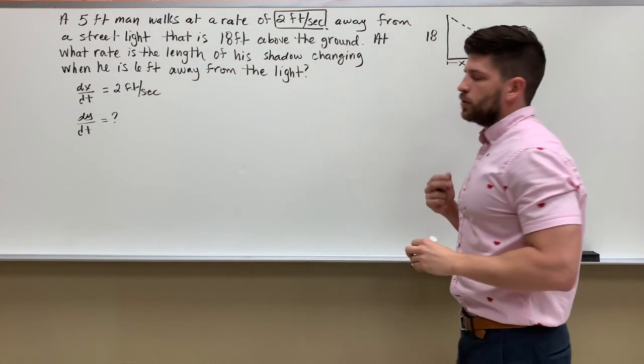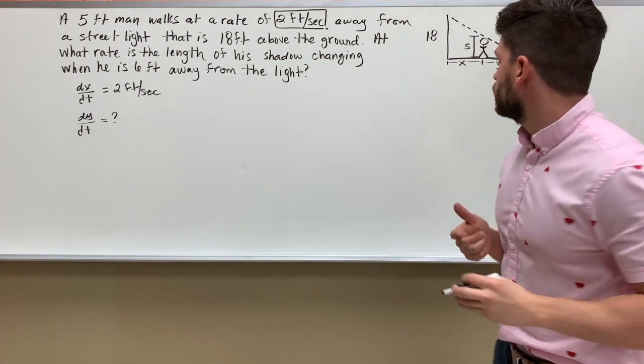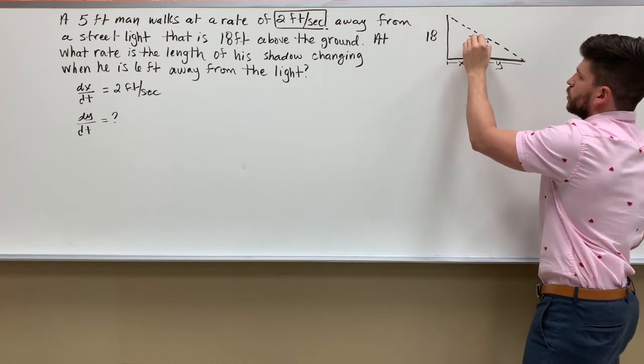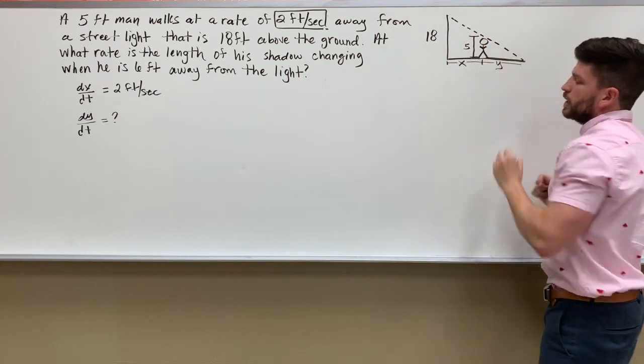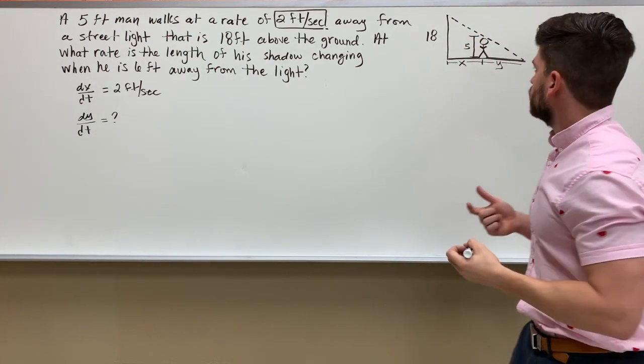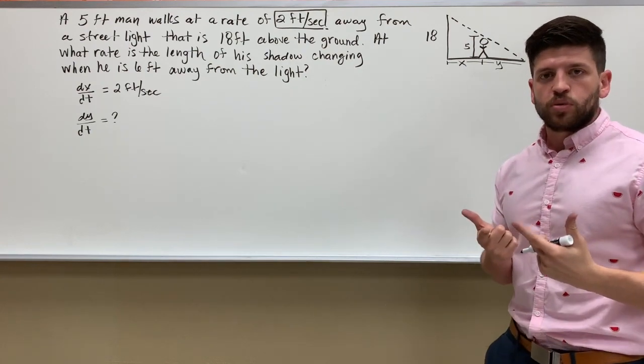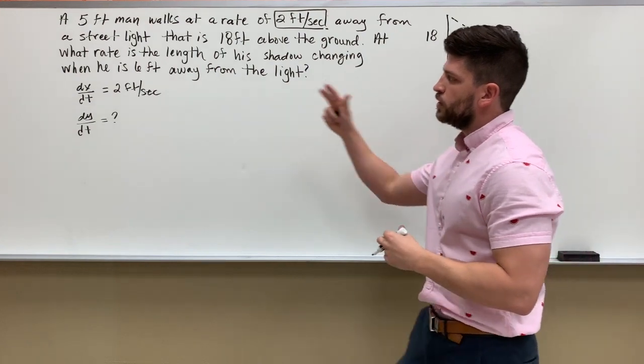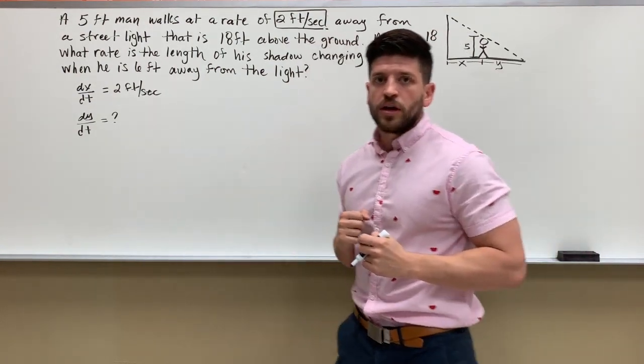Now the interesting part about this is we have similar triangles. If we look at the big outside triangle and I also have this interior triangle, they are similar. Okay, all their angles are going to be equivalent, which means their side lengths are proportionate. So how I'm going to finish this problem is I got to solve a proportion.